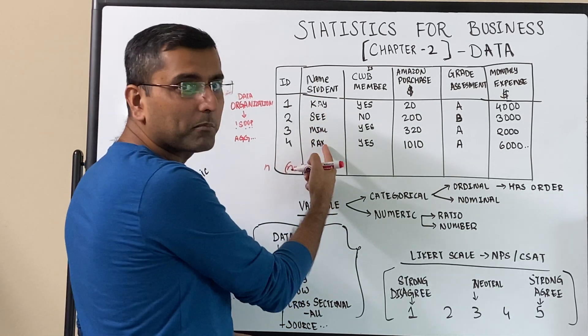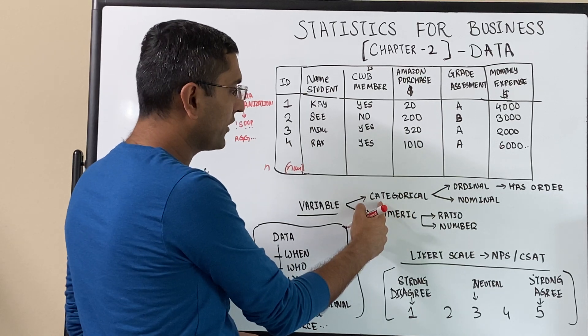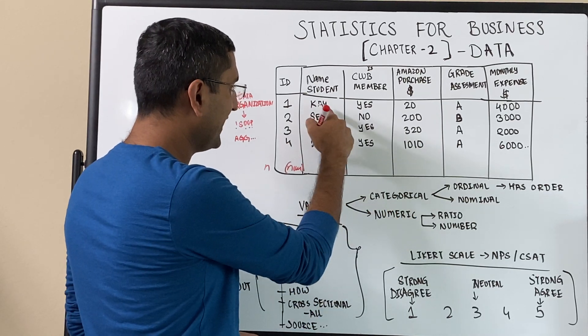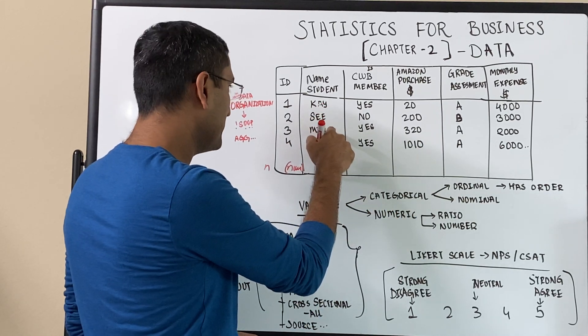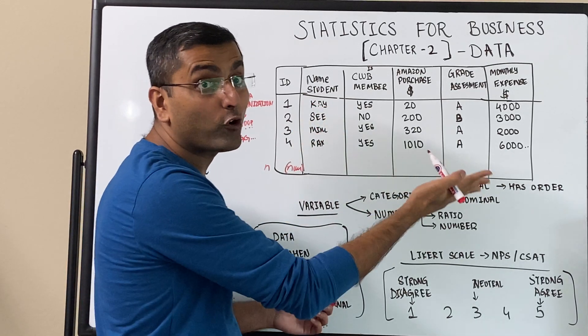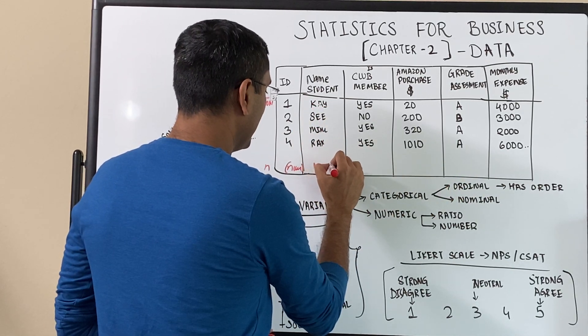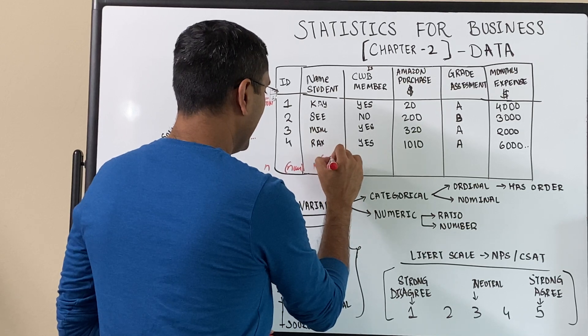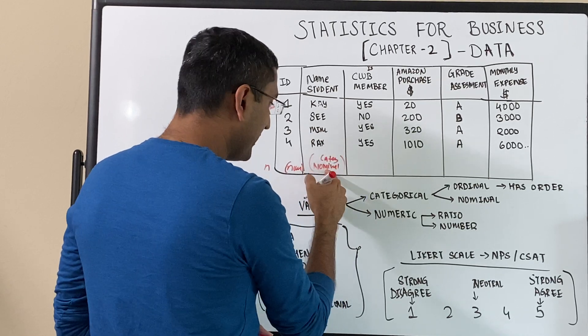And then student name, it's not a numbers. It's not numeric. It's categorical, but is there an order? Can you say K is greater than MIM or MIM is greater than K? No, you can't do that. It's not ordinal. So it's nominal. So this is nominal and categorical, categorical nominal variable.